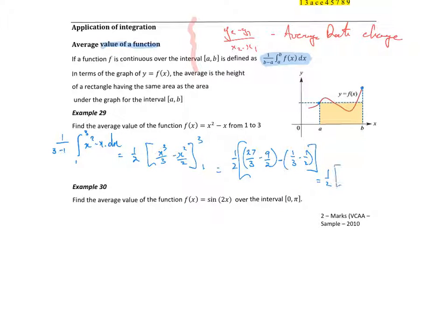That's equal to a half at the front of x cubed on 3 minus x squared on 2, between 3 and 1. Which is equal to a half of 27 on 3 minus 9 on 2, subtract 1 on 3 minus 1 on 2. Let's make it all in 6s. We get 54 on 6 minus 27 on 6, minus 2 on 6, and minus a minus is a plus 3 on 6.